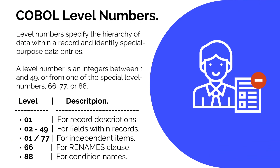COBOL level numbers are used to specify the hierarchy of data within a record. A level number is an integer value between 1 and 49, with three special level numbers: 66, 77, and 88. Level 01 is used for record description. Level 02 to 49 is used to define fields within a record. Level 01 or 77 are used to define independent items. Level 66 is used for the COBOL rename clause, and level 88 is used for conditional names — both of which will be covered in separate videos.